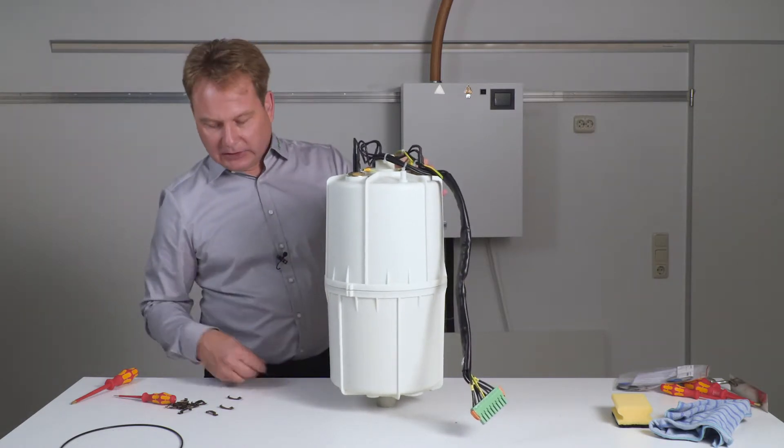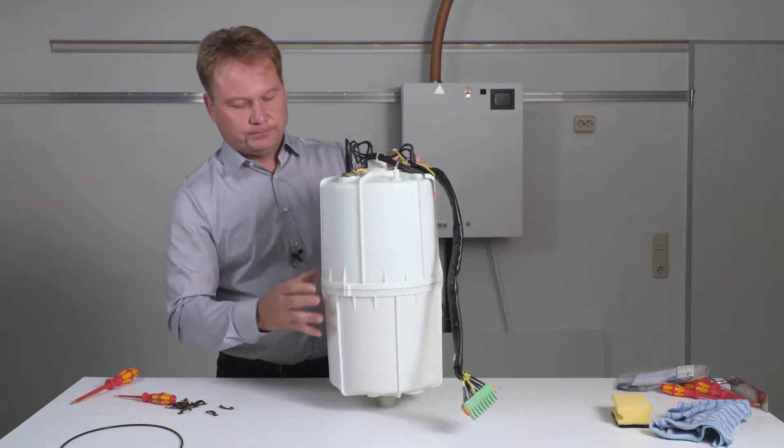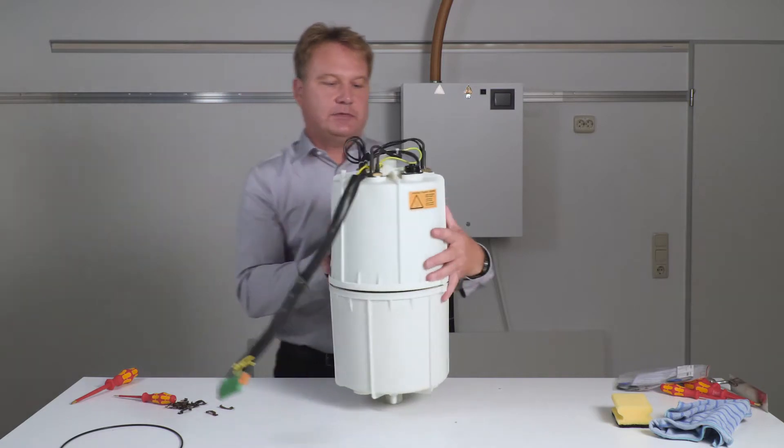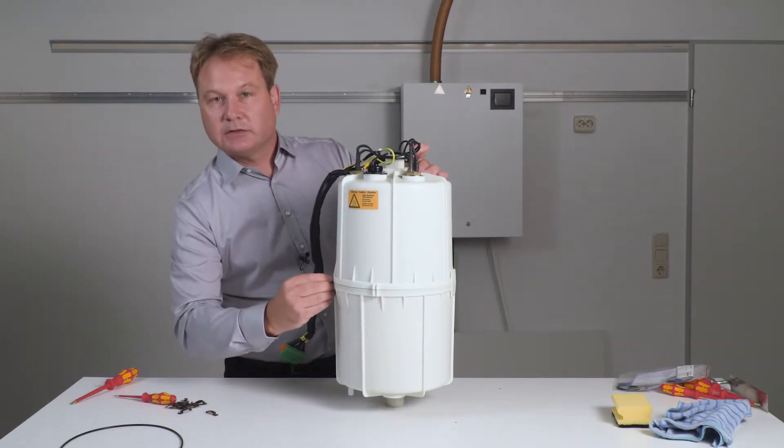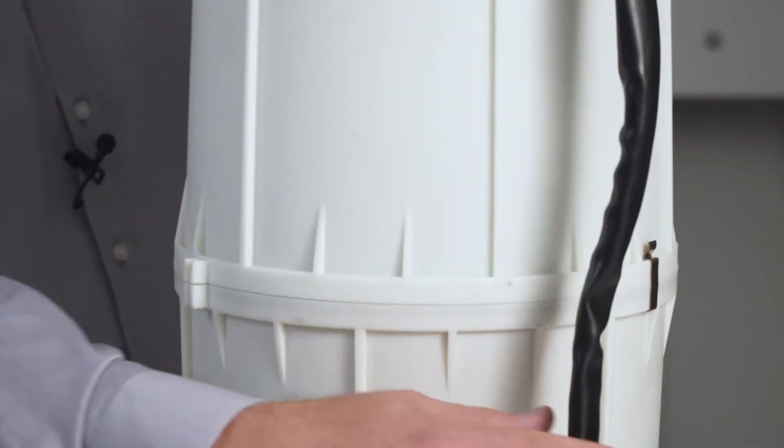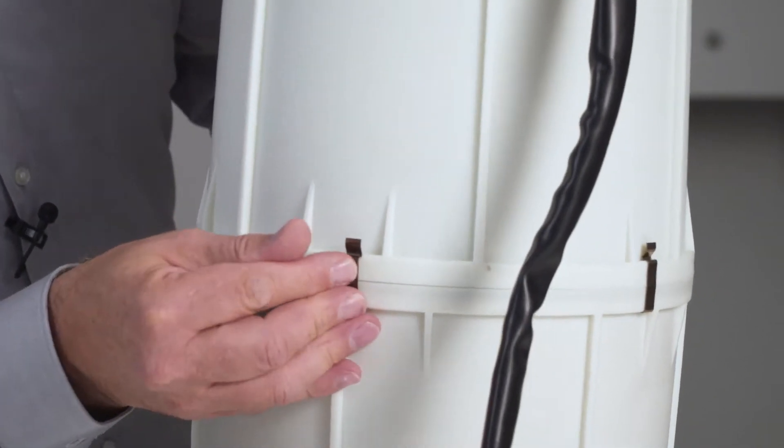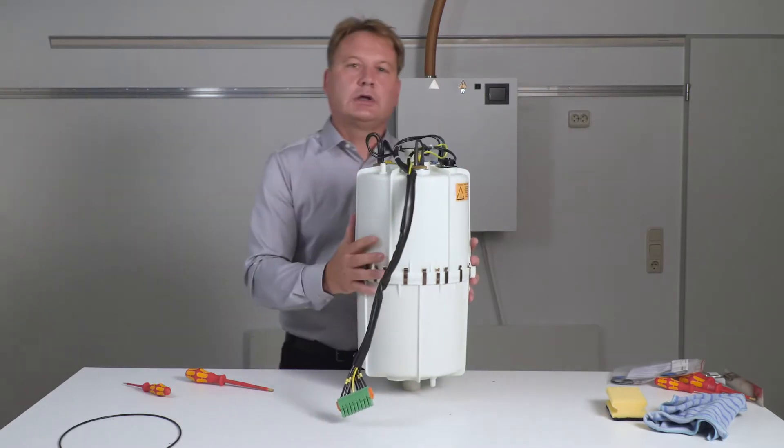I will start to reattach the clamps. Turn the whole cylinder by 180 degrees and attach the second clamp. Then turn 90 degrees. Attach the third one. Now I can attach the remaining clamps.